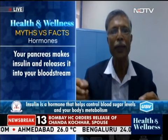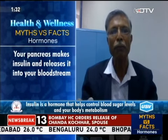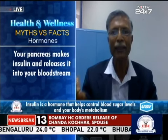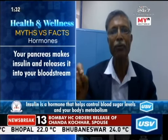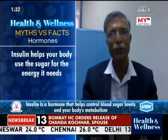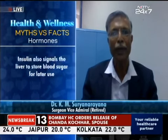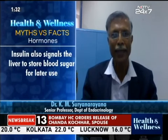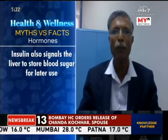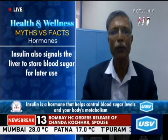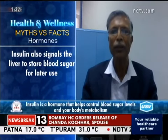Insulin also converts glucose into a storage form called glycogen, stored in the liver and utilized whenever we are hungry or fasting. When we eat, more insulin is produced to keep blood glucose within a normal range. When fasting, insulin secretion decreases and another hormone, glucagon, is secreted by the pancreas to prevent blood sugar from falling too low. If insulin is deficient or not functioning properly, blood glucose levels rise — that is diabetes.